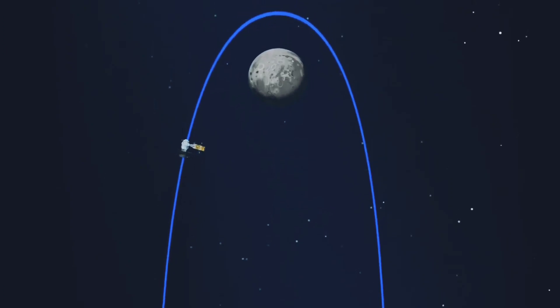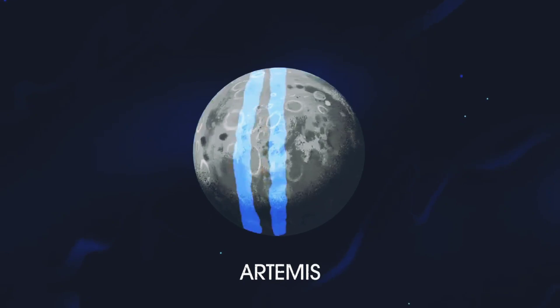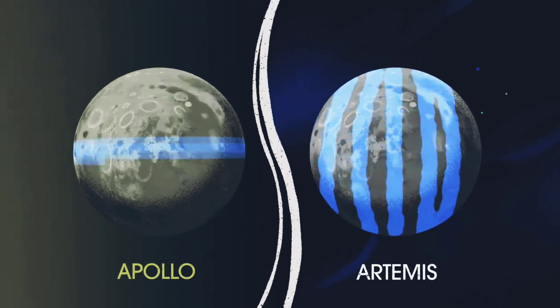This enables ongoing science to be conducted even between human missions. The Gateway is also capable of adjusting its orbit to allow access to every part of the Moon, something the Apollo missions could not do.